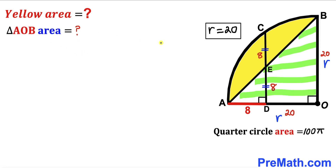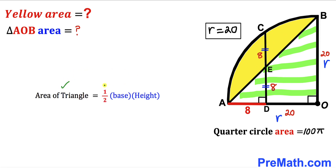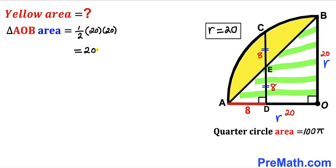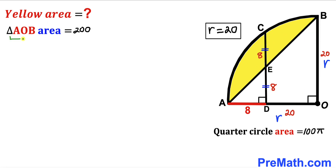Next, we calculate the area of right triangle AOB. Using area equals ½ × base × height, with height = 20 and base = 20: area = ½ × 20 × 20 = 200 square units. So the area of triangle AOB is 200.